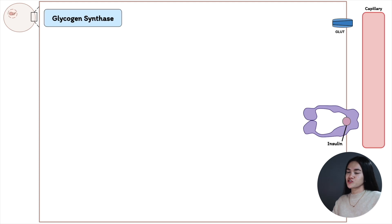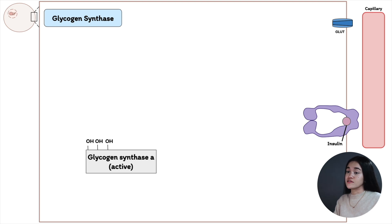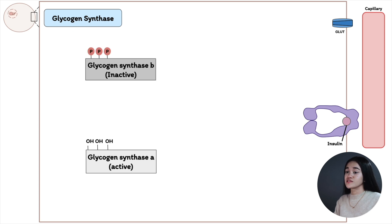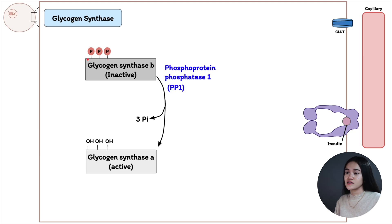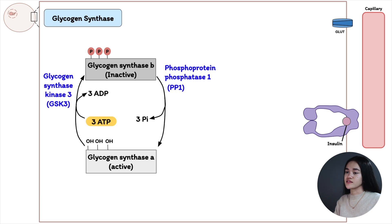Now let's look at glycogen synthase. Similar to glycogen phosphorylase, glycogen synthase also has phosphorylated and dephosphorylated forms. Glycogen synthase a is the active, dephosphorylated form. The inactive form is glycogen synthase b, which is phosphorylated. The enzyme converting glycogen synthase b to glycogen synthase a is phosphoprotein phosphatase 1 (PP1), which removes the phosphate groups.